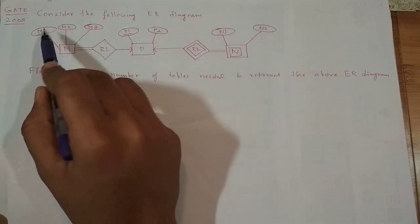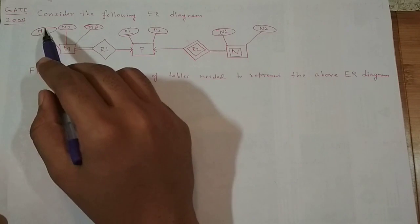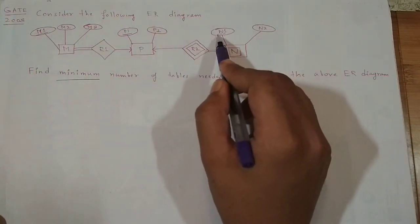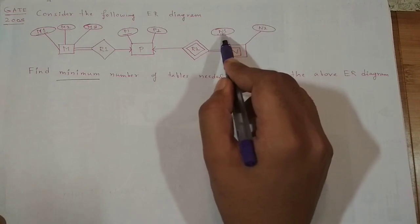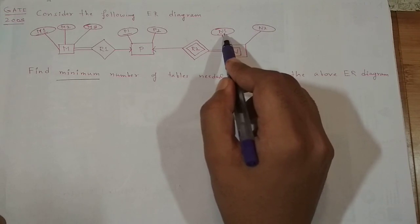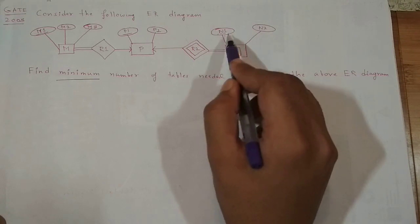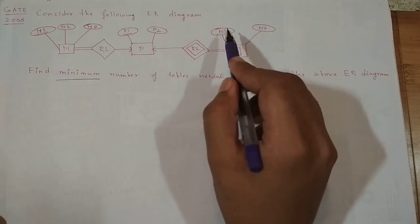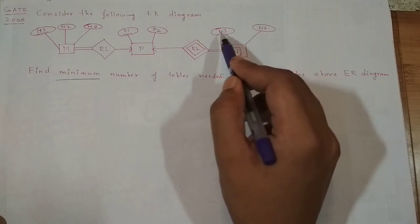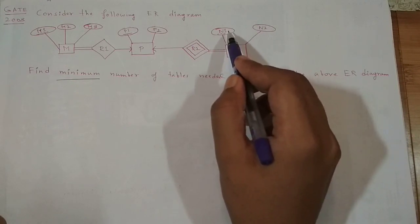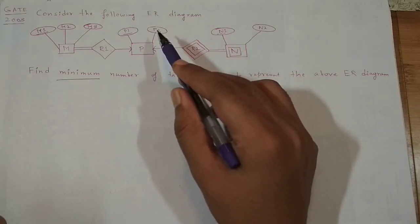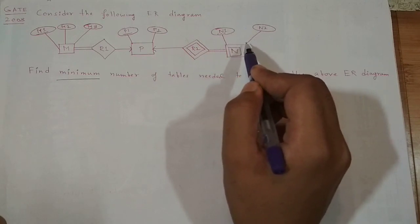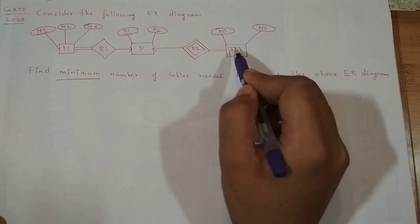An attribute which is underlined is known as a key attribute or primary key, and an attribute which is underlined with dotted lines is known as a partial key. A partial key, when taken together with the primary key of a strong entity, will help identify the records in a weak entity uniquely.